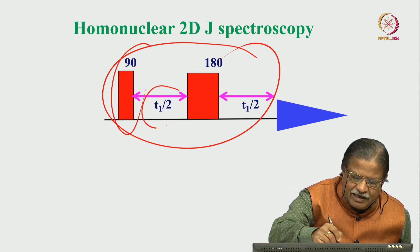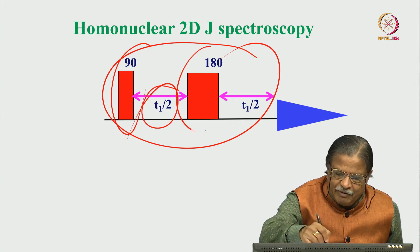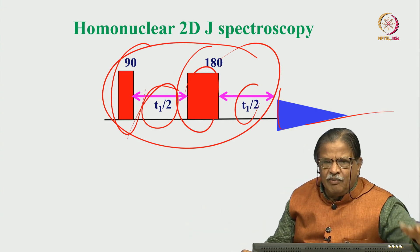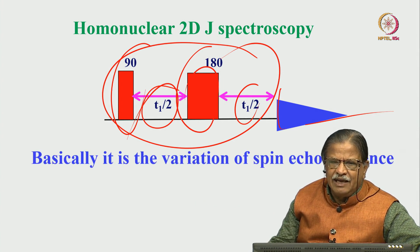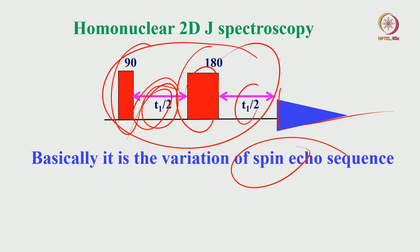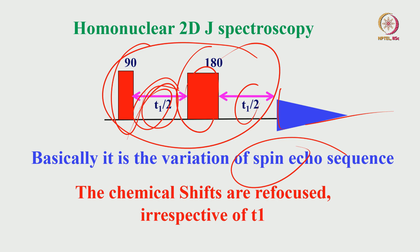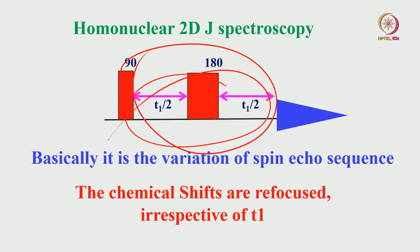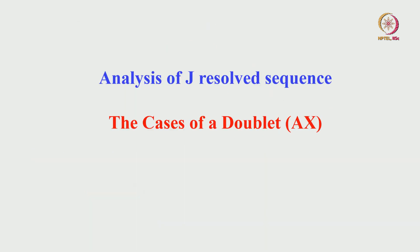Homonuclear 2D J-resolved is essentially a SPINECO sequence where instead of fixing T1 constant as in SPINECO, we vary it. The chemical shifts are always refocused by the homonuclear SPINECO, but couplings continue to evolve - irrespective of whatever T1 value you use, chemical shifts are always refocused. We will take simple examples to see how the J-resolved spectrum comes out. Let us consider the simple case of a doublet AX spin system.